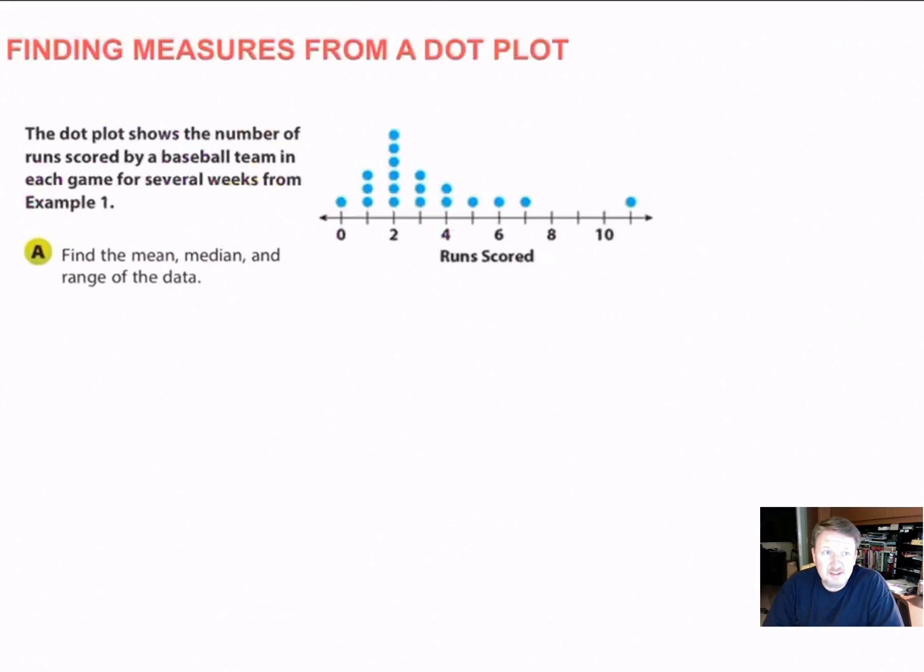So the next thing we want to do is how to get units of measure. So in this particular thing, we've got a dot plot that shows the number of runs scored by the baseball team for several weeks. This is from the first example that I did. This is what the dot plot I just made looks like. So it says find the mean, median, and range of the data. So that's a pretty easy thing. The first thing I want to do is find the range. So the range is the smallest number, which is 0, to the biggest number, which is 11, and then subtract the smallest number from the biggest number. So the range is 11. That was the easiest thing we could do.